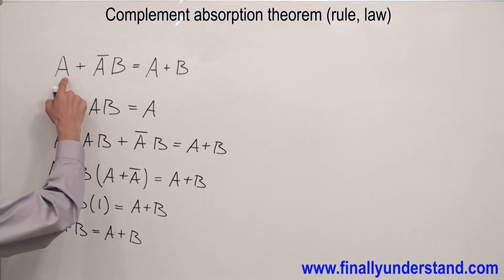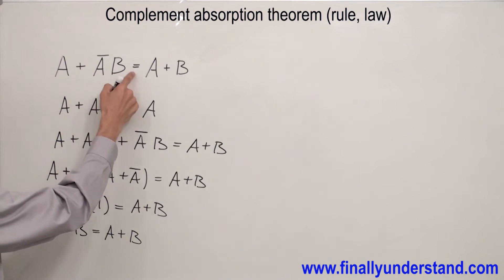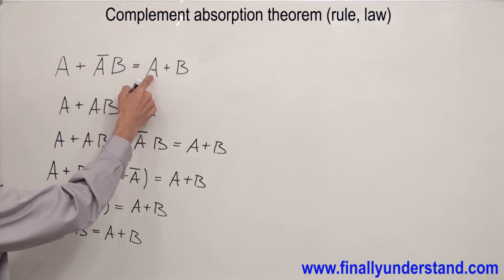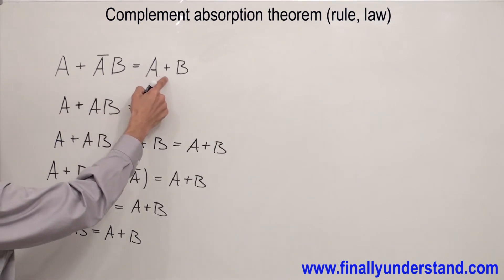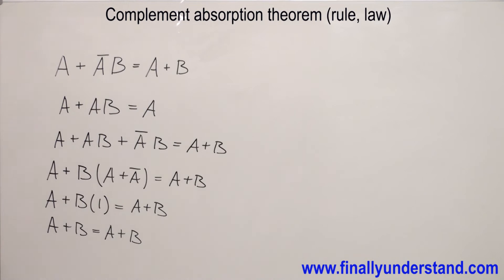Remember, B times 1 equals B. That's why I have A or B equals A or B. So this is why A or A'B is equal to A or B. This is the Complement Absorption Theorem.